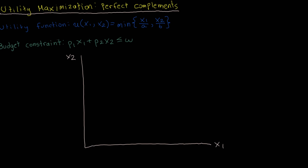Up next is the budget constraint, which states that total expenditure on both goods one and two must be less than or equal to a consumer's wealth or income level, represented by W. Expenditure on both goods is just the price of good one times the quantity of good one, plus the price of good two times the quantity of good two. With this utility function, more is better, so long as we're increasing the quantity of both goods.